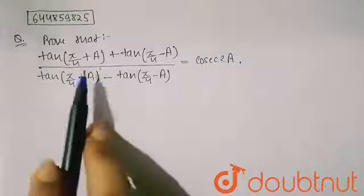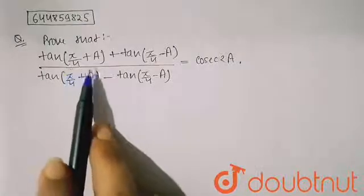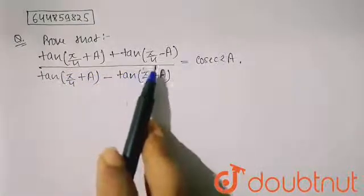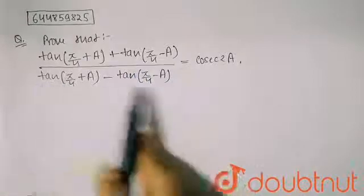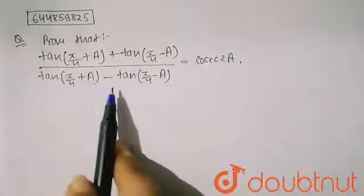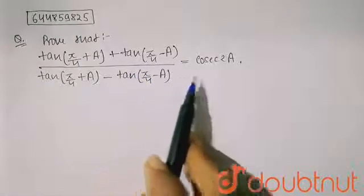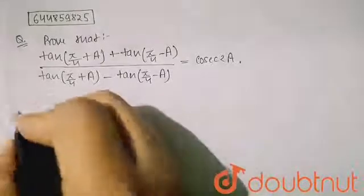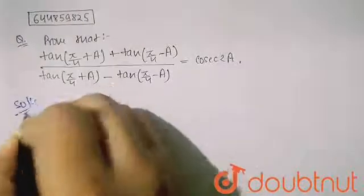...it is given that prove that [tan(π/4 + a) + tan(π/4 - a)] upon [tan(π/4 + a) - tan(π/4 - a)] is equal to cosec 2a.